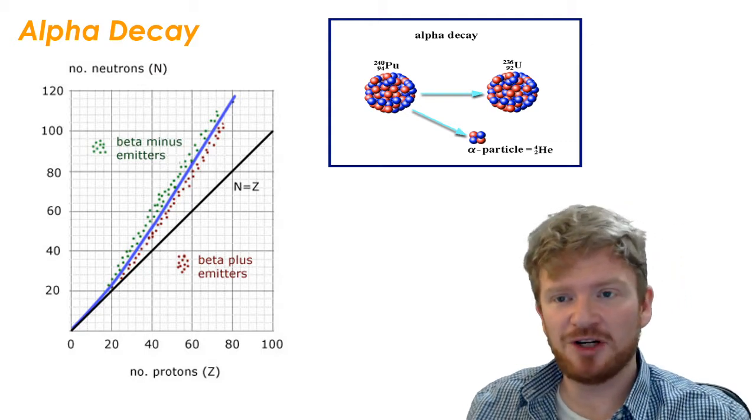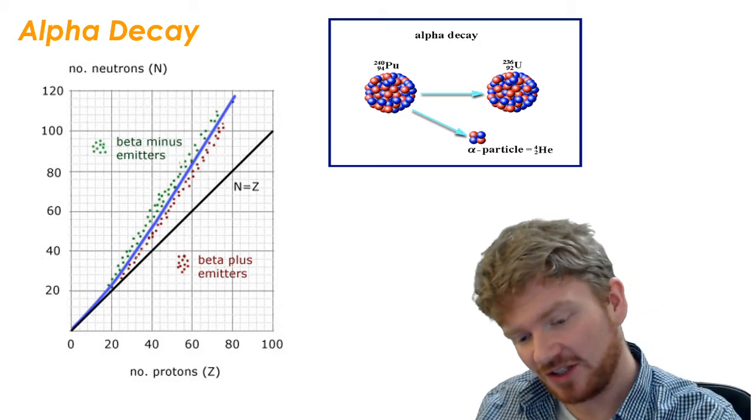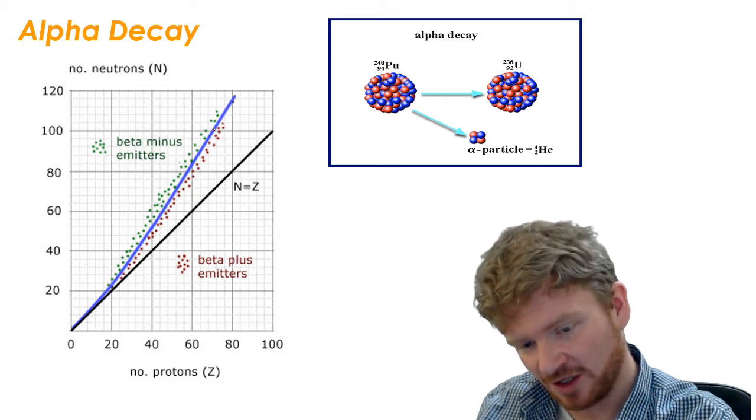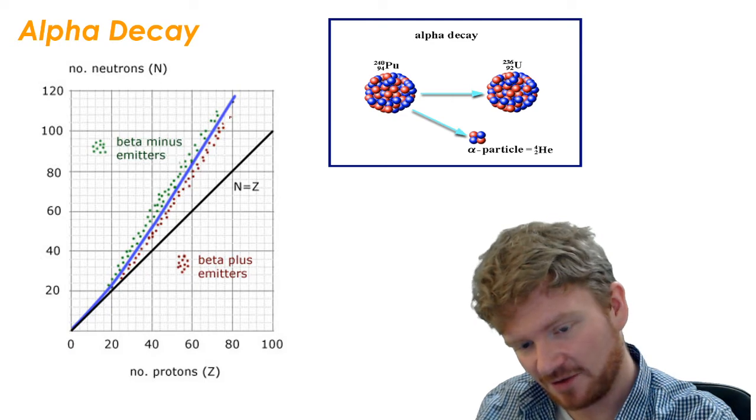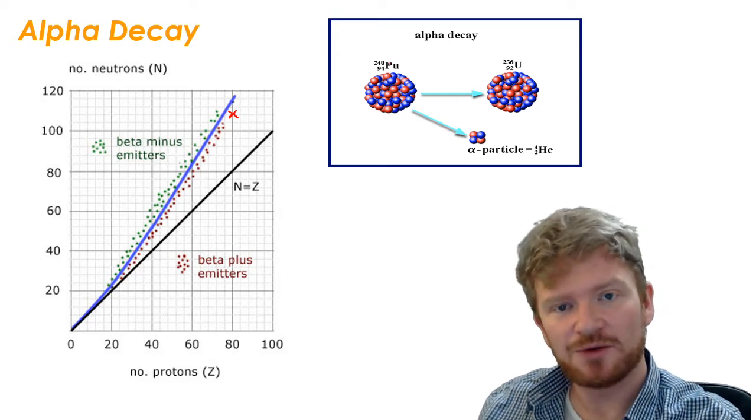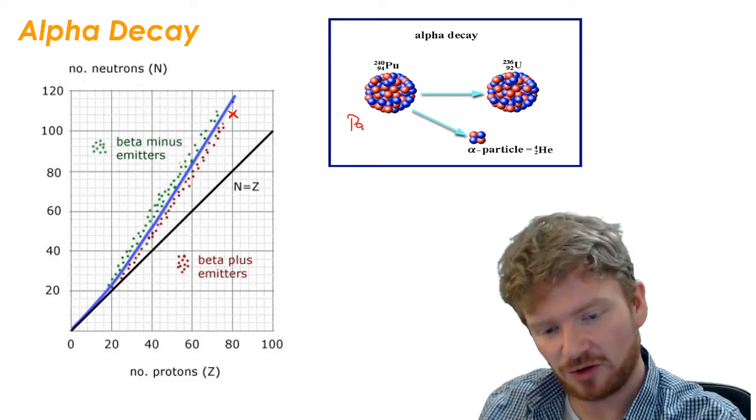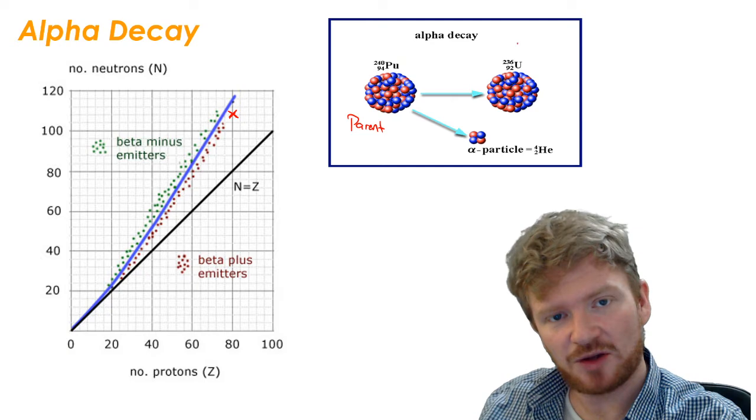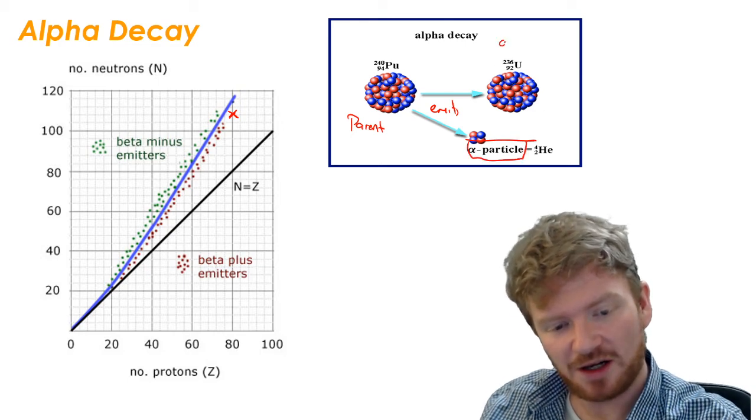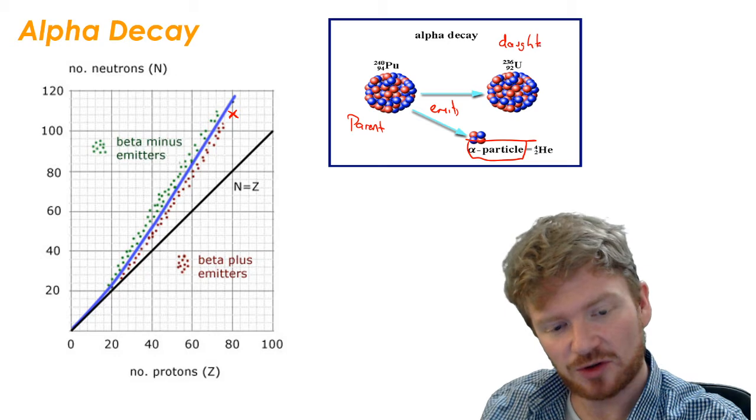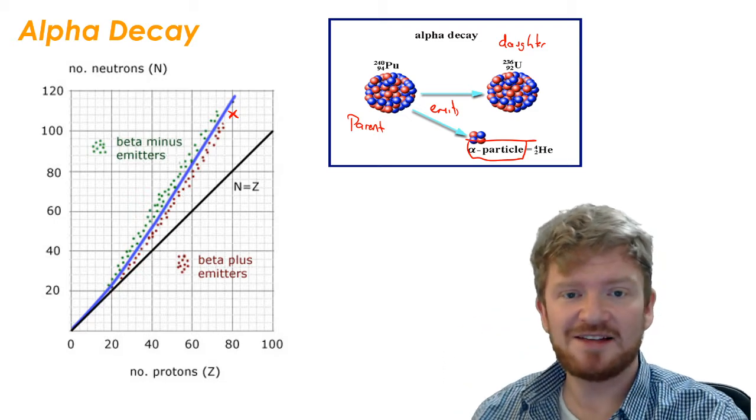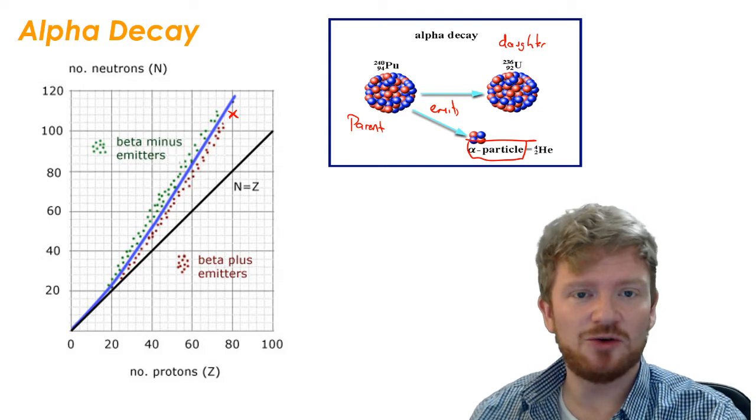So the first type of radioactive decay is called alpha decay. Now alpha decay is something that might happen in the middle of other decays. So let's say I have an element, yeah, let's say I have an element here, with this cross here. In an alpha decay, what you have is a parent nucleus that decays and emits an alpha particle and leaves behind or becomes a daughter nucleus. So in this case, I have plutonium-240 that decays by alpha emission into uranium-236. So plutonium is the parent, uranium is the daughter, and it also emits an alpha particle.